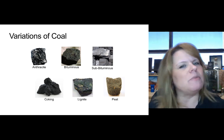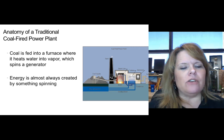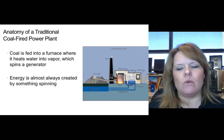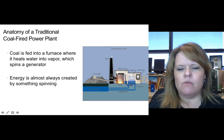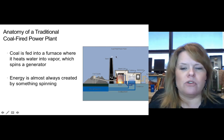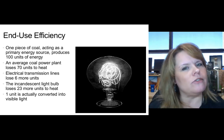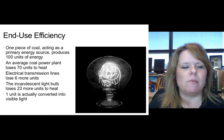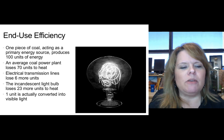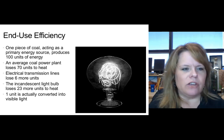To deal with that, we have to put environmental controls in place. Coal is fed into a furnace where it heats water into vapor and spins a generator — energy is almost always created by spinning something, and that's how a coal-fired plant works. Coal is brought in by rail car, put into a stack, and then air scrubbers are added to help remove materials that are bad for the atmosphere. One piece of coal acting as a primary energy resource produces 100 energy units, but an average coal power plant loses 70 units to heat, electrical transmission lines lose 6 more, and the incandescent light bulb loses 23 more to heat — leaving just one unit converted into visible light.